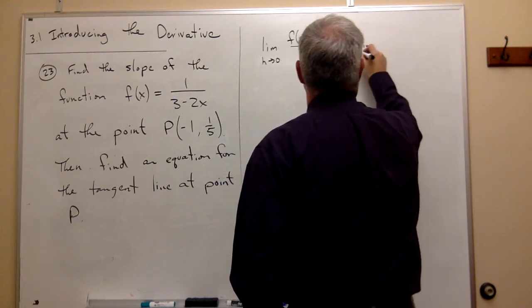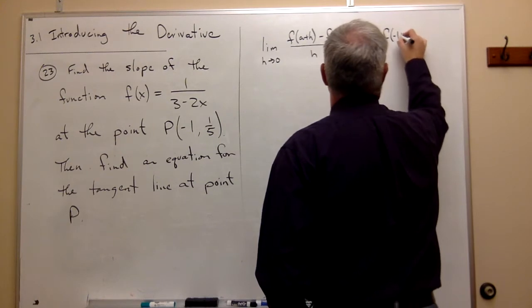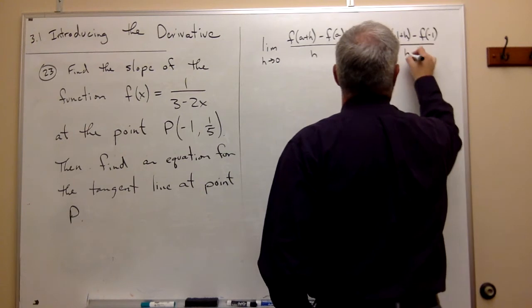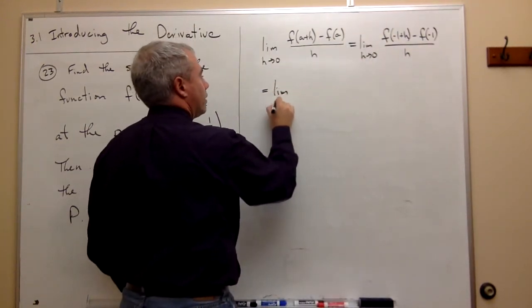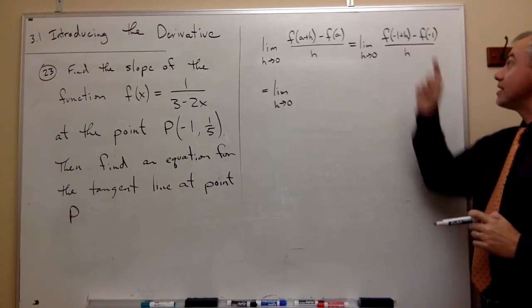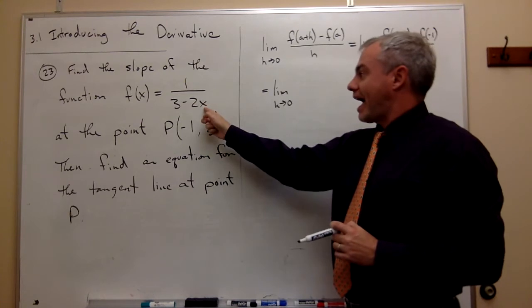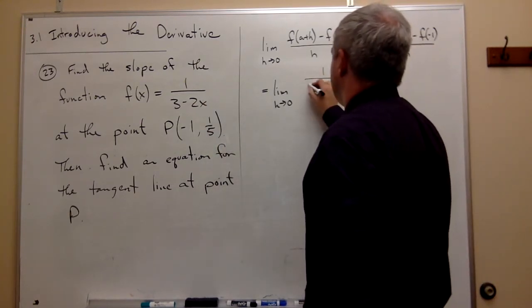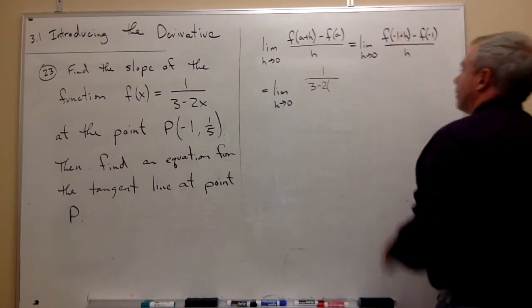We get the limit as h goes to 0 of f of minus 1 plus h minus f of minus 1, all over h. Now we need to know what is f of negative 1 plus h. So I take negative 1 plus h and plug it in for x, and I get 1 over 3 minus 2 times the quantity minus 1 plus h.